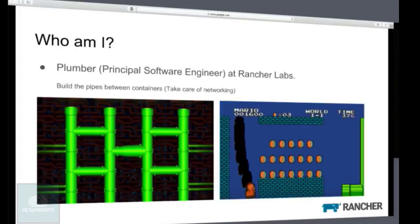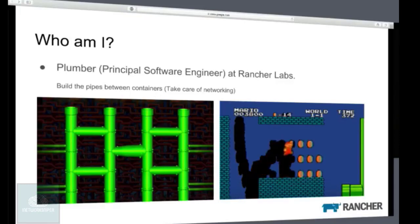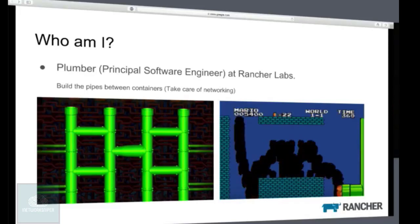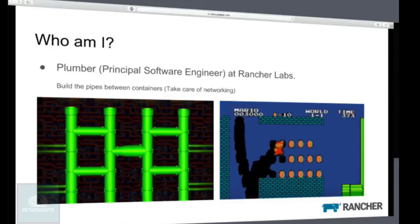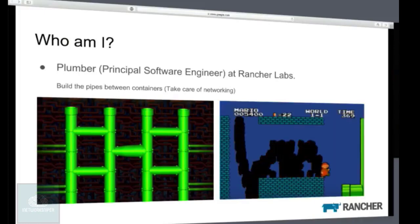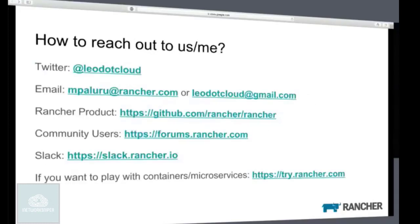Let me introduce myself. I have been working with Rancher for the past one and a half years as a principal software engineer. I call myself a plumber because I take care of building the pipes for the containers in our product. Just the way Mario goes inside one end of the pipe and shows up magically on the other end, I make sure the data sent by one container goes through the pipe safely and reaches the exact destination. I've built CNI plugins at Rancher — an IPsec overlay plugin, a VXLAN plugin, and I've implemented network policies. Before joining Rancher, I was at Gigamon, Cisco, and I worked at a failed startup.